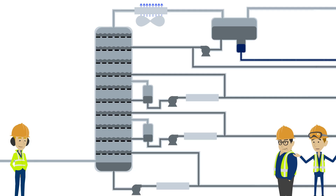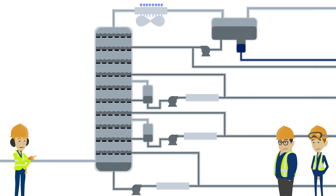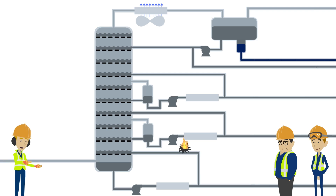That seemed a lot simpler than the reactor part of the unit. You're right, it's not quite as complex as the reactor, but it can still be quite hazardous, as the fractionator tower operates at very high temperatures — above the auto-ignition temperature of the hydrocarbons inside. If there is any loss of containment, the hydrocarbons could auto-ignite, causing a fire. Why not operate at a lower temperature to prevent that?